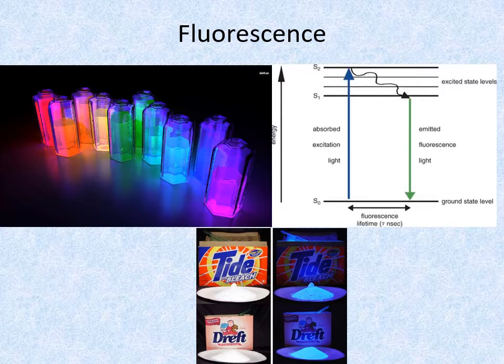Fluorescent brightening agents in detergents are one way to make a shirt even more brilliant white.